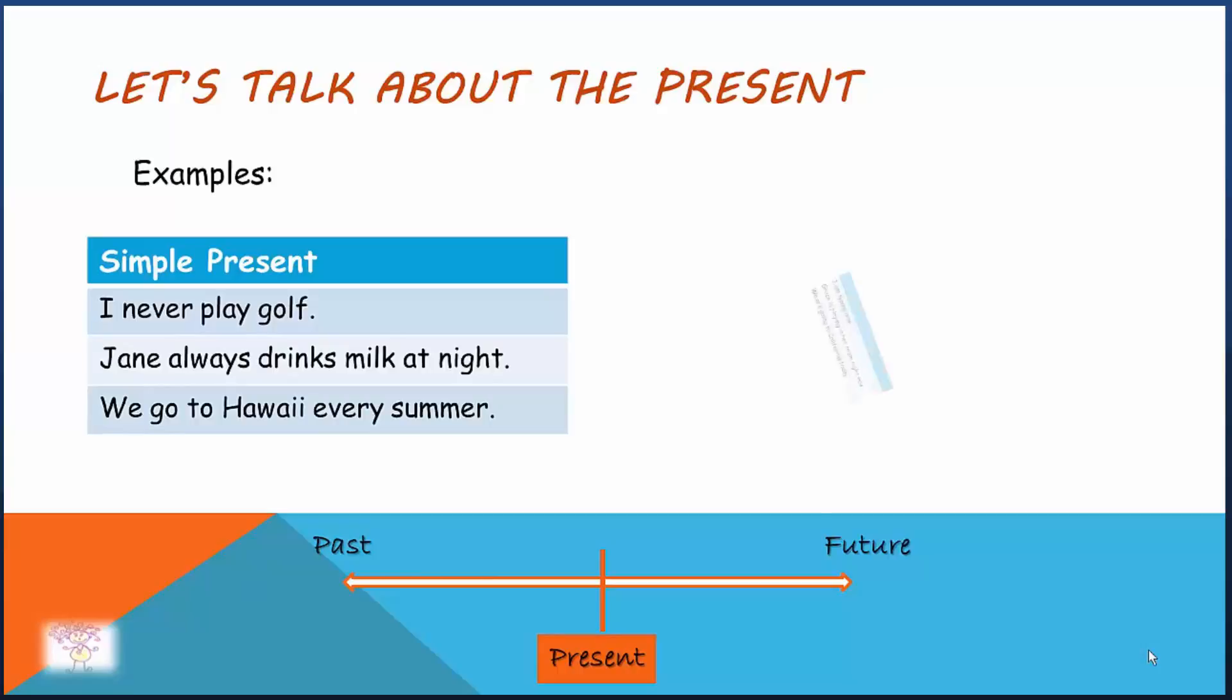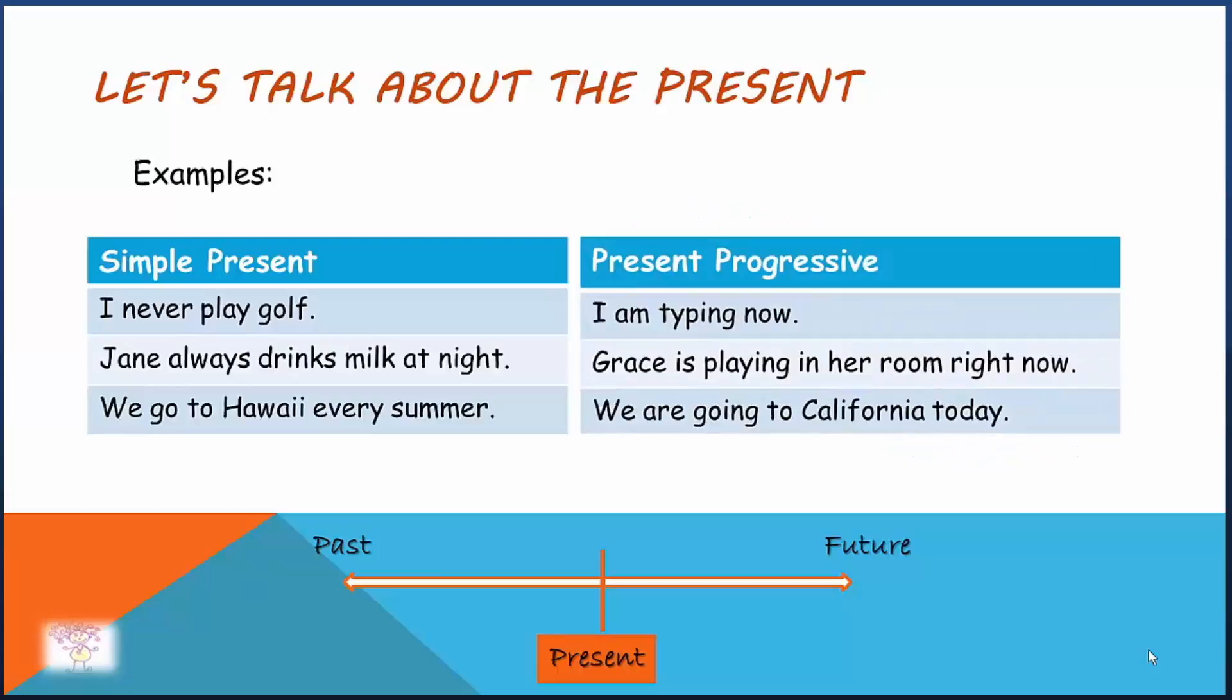And here are some in the present progressive tense. I am typing now. Grace is playing in her room right now. We are going to California today. Any time you see or hear the word progressive, it means the verb is in the ing form, as in typing, playing, going, etc.